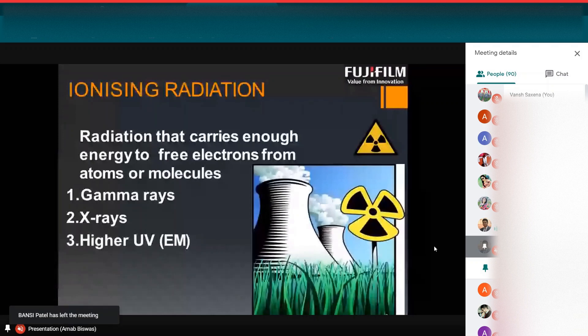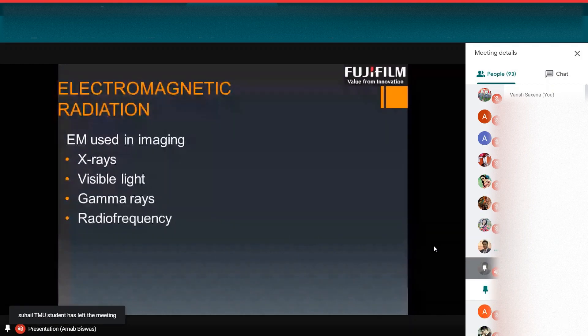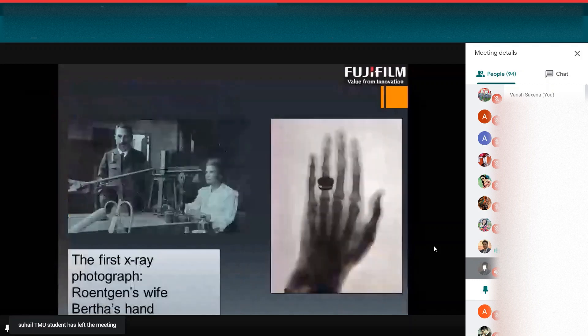The electromagnetic waves which are used in imaging are X-rays, visible light, gamma rays, radio frequency waves, etc. This is the first X-ray image of Roentgen's wife Bertha.